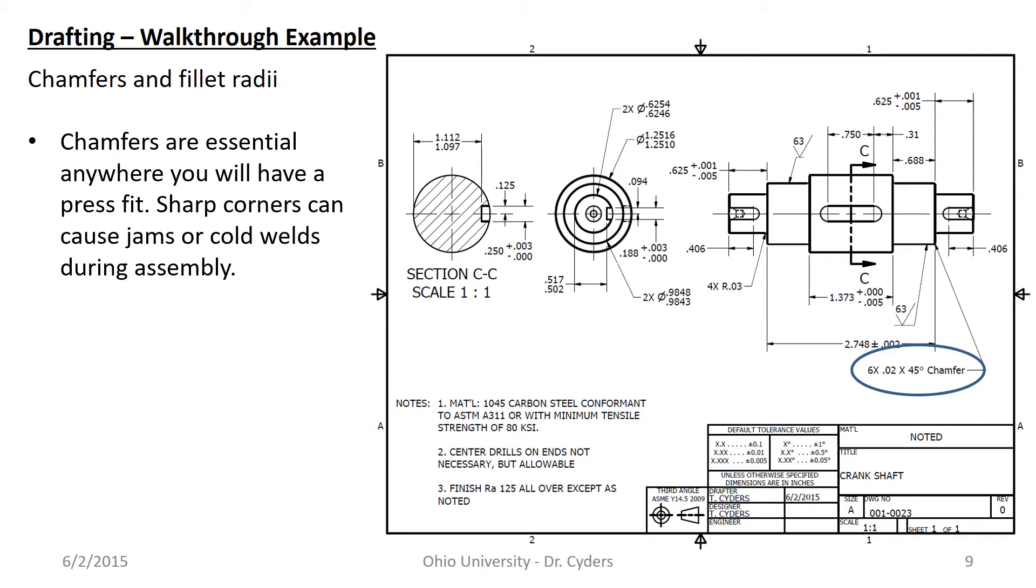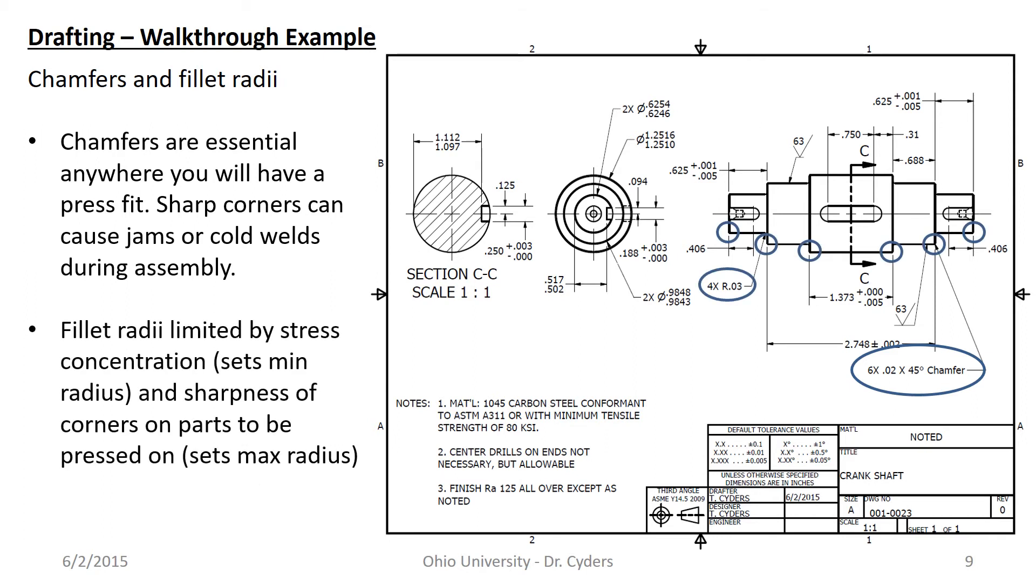So chamfers are essential anywhere you're going to have a press fit. Sharp corners can cause cold welds especially if you're using a stainless steel or you're pressing together steels that are what we would call metallurgically compatible. A lot of pressure on a single point can actually weld those two together and now they're one solid, they're not going to come apart. So we want to avoid that high stress concentration by not allowing any sharp corners. This is also one of the reasons that we want to break corners and deburr on most of our parts unless we really need those sharp corners. Fillet radii in this case are limited by stress concentration and the sharpness of the corners and the parts to be pressed on. In other words my bearings need to locate on this face and so I've made these fillet radii sharp enough that the bearing can always locate there.